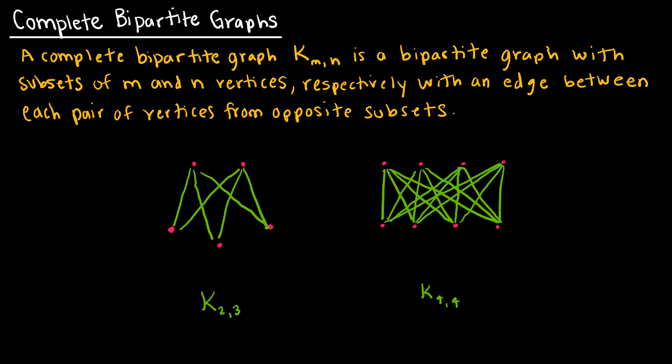The last special type is a complete bipartite graph. We've talked about complete graphs and bipartite graphs; now we combine them. Notice the notation: K with two subscripts, such as K_{2,3}, tells us how many vertices are in each of the two subsets. This graph has a subset of two and a subset of three, and all points in one set are connected to all points in the other set.